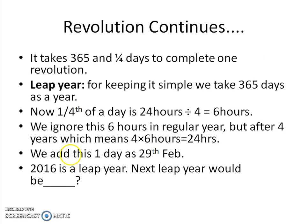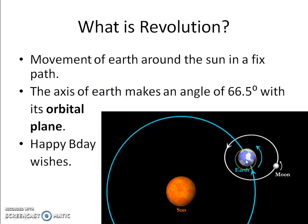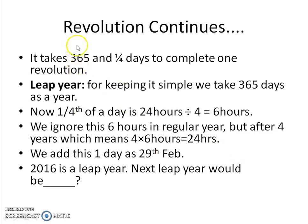Revolution takes 365 days and one-quarter of a day for the Earth to complete. So when the Earth starts here and goes all the way around, it will come back here — taking 365 days and one-fourth of a day to complete one revolution.